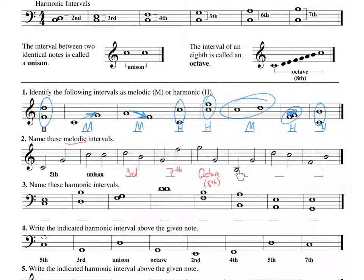B to G. So you have to count your ledger lines: B to C, D, E, F, G. One, two, three, four, five, six. So if we counted every note in between, you'd have a sixth.